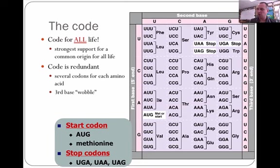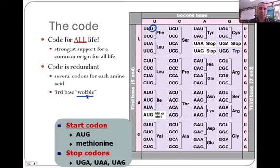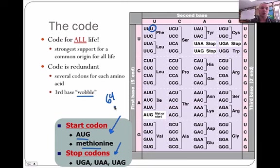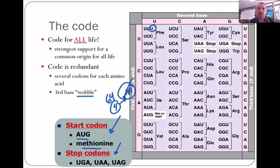Within every triplet code there is a third base called the wobble base, and this is the one that most often changes the amino acid. There are two specific codons you need to know: the start codon, which will always be AUG, standing for methionine — that's very important to remember. And then there are three stop codons. Out of those 64 codons, four of them do not code for amino acids.